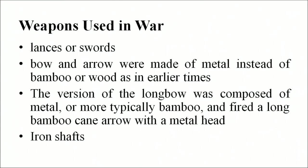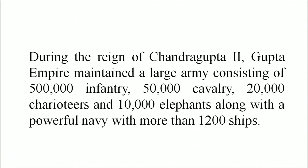What weapons did they use during war? They used lances and swords. Bows and arrows were made of metal instead of bamboo or wood. The version of the longbow was composed of metal, or more typically bamboo, and fired a long bamboo cane arrow with a metal head. Iron shafts were used against armored elephants. Fire arrows were not part of the bowmen's arsenal, contrary to popular belief. During the reign of Chandragupta II, the Gupta empire maintained a large army consisting of 5 lakh infantry, 50,000 cavalry, 20,000 chariots, and 10,000 elephants, along with a powerful navy of more than 1,200 ships.